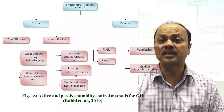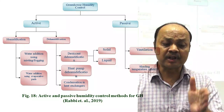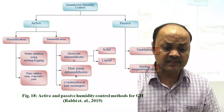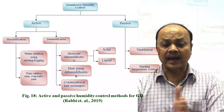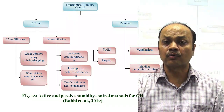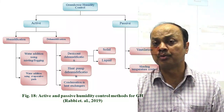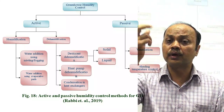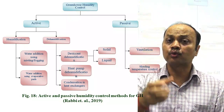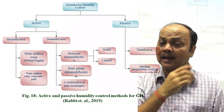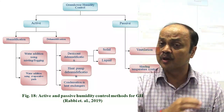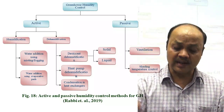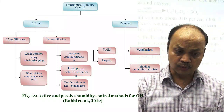Apart from humidification, dehumidification methods are available, such as desiccant dehumidification — which can work on a solid or liquid basis. You pass the air through the dehumidifier, which works on different principles, and then pass the dehumidified air inside the greenhouse.